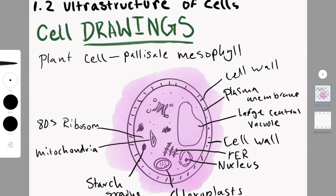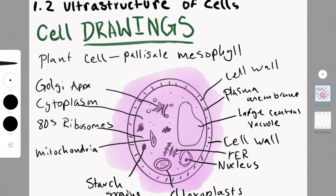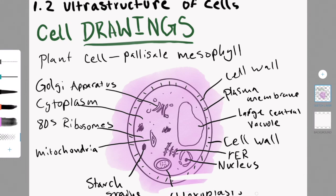Now we're drawing the plant cell. I will explain and then write down. The cell wall in a plant cell is a little different from the cell wall in a prokaryotic cell. In a plant cell, it's made out of cellulose and makes sure that the plant stays erect and prevents excessive water uptake.